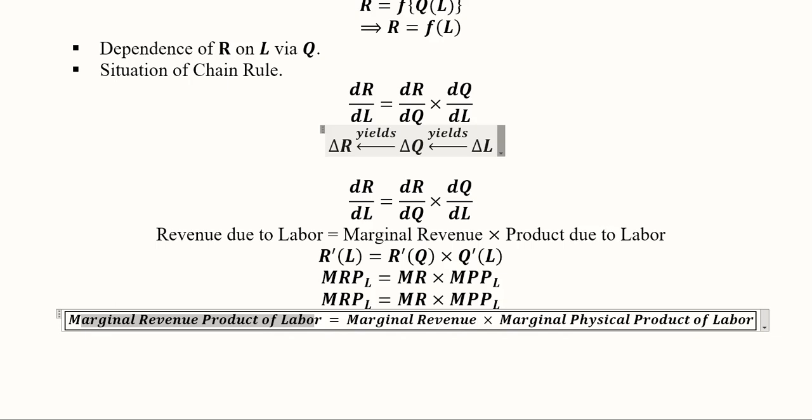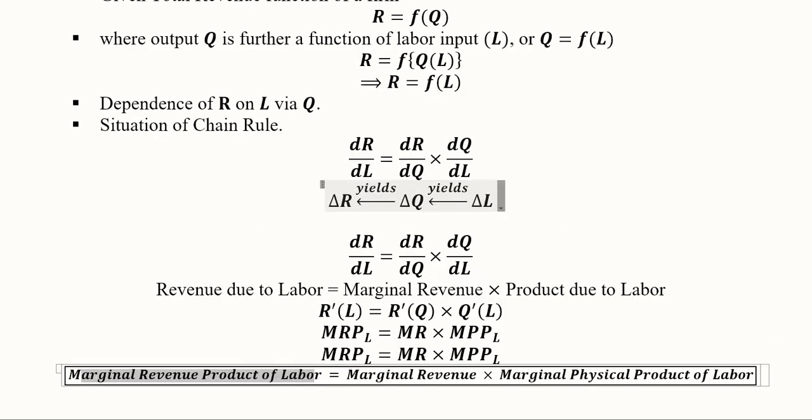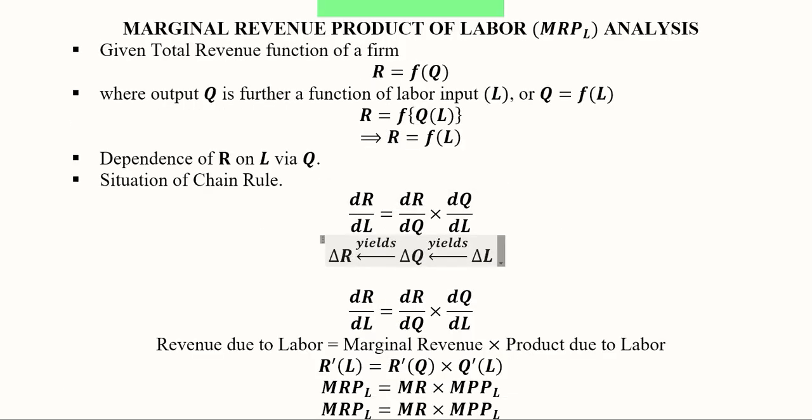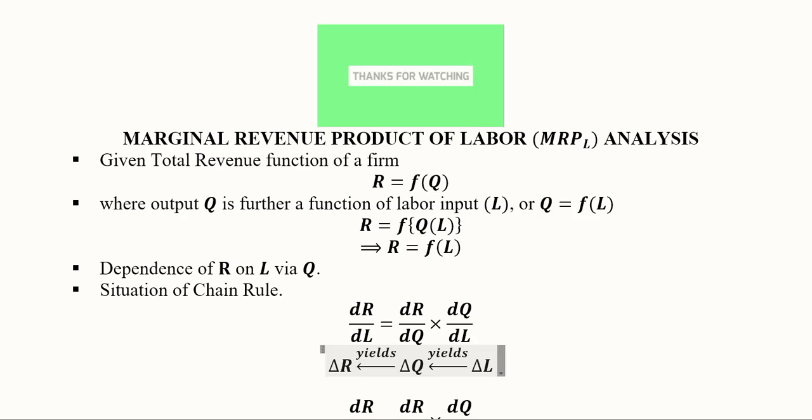So in this way, this marginal revenue product of labor can be found by using the chain rule, and in this video we did the same symbolically. We can also do this numerically if we are given the numerical forms of the revenue function and the output function. Thank you.